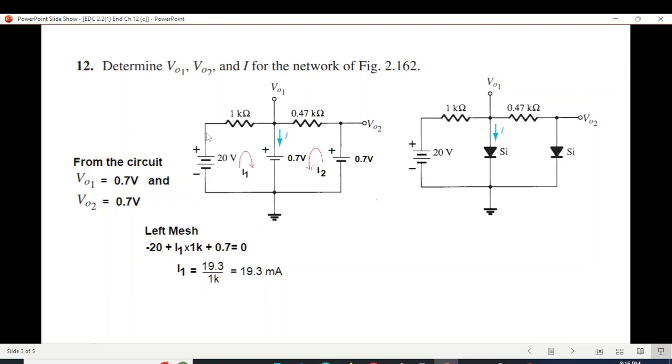From here we go minus 20, I1 into 1k, and plus 0.7. So I1 is 19.3.